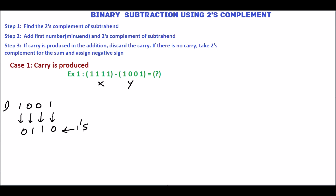Then add 1 with this to get the 2's complement. 0 plus 1 gives 1, 1, 1, 0. This is the 2's complement.